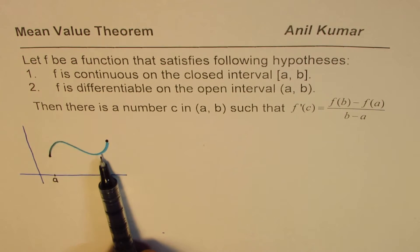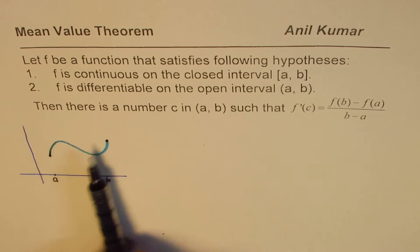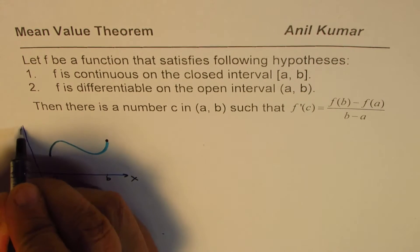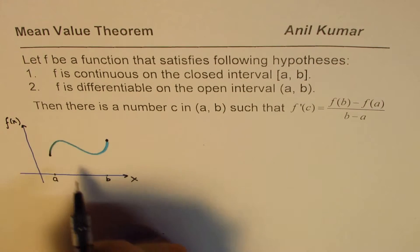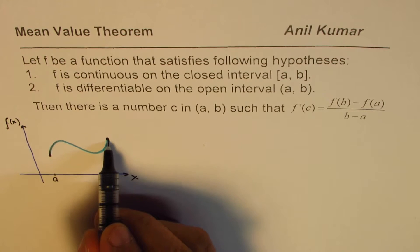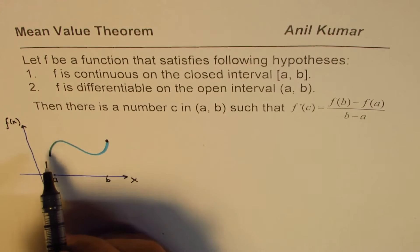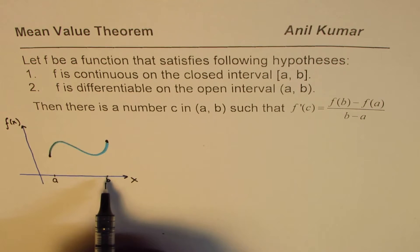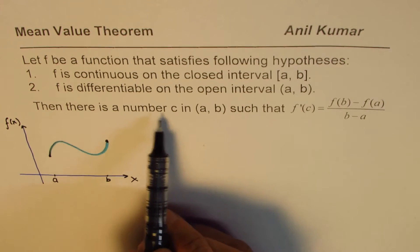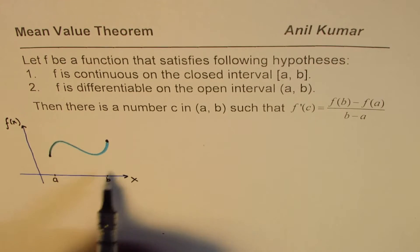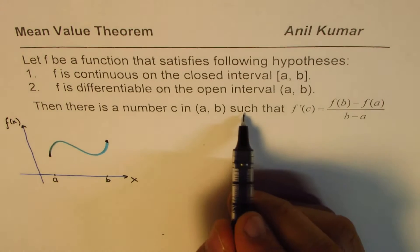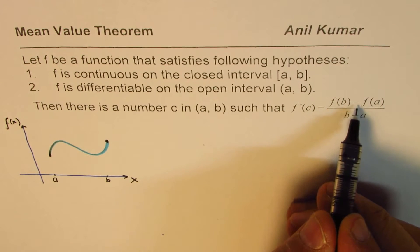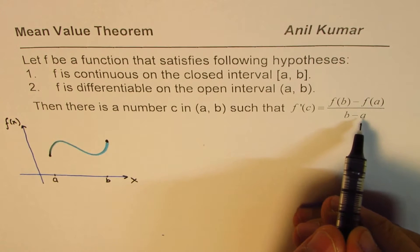The function is differentiable within this interval. So we are considering a function f(x) which is continuous within the closed interval [a, b] and is differentiable on the open interval (a, b). In that case, there is a number c within the open interval (a, b) such that the derivative f'(c) equals f(b) minus f(a) divided by b minus a.